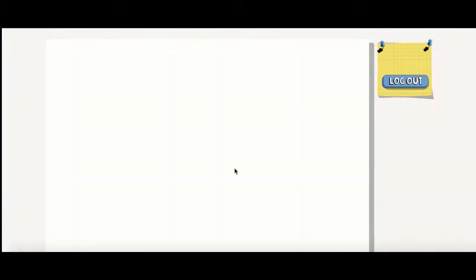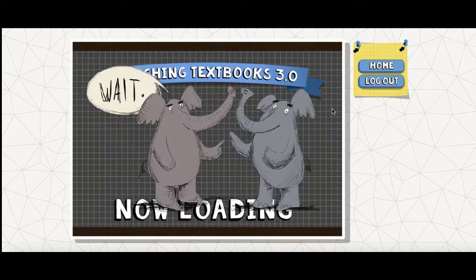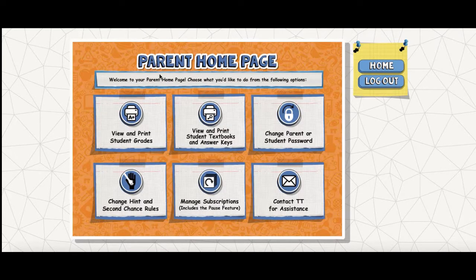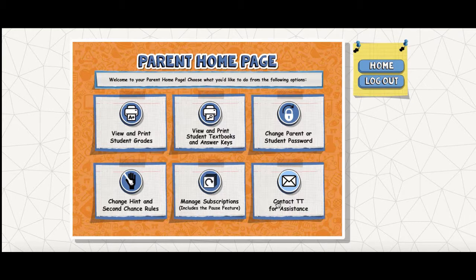We're going to open our launch page and pull up our lessons. From here we can view and print the student grades, view and print the student textbook and answer keys, change your password or your student's password, change hint and second chance rules, manage your subscription, and contact support. We haven't had any reason to contact support directly, but there was a glitch in the system for a couple of days not long after we began using this. They were very good about sending out emails and keeping us updated, and Teaching Textbooks let us know as soon as the issue was resolved.